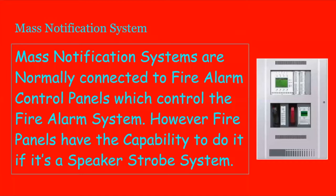Mass notification systems are normally connected to fire alarm control panels, which control the fire alarm system. However, fire alarm panels have the capability to do it if it's a speaker strobe system. So if you have a system like mine, which is a horn strobe system, you will not be able to do that unless you're doing it through an external intercom, which is not run through the fire system. But mass notification systems don't only come in fire systems — they also are outside of fire systems, so they can be related with tornado sirens and other sirens like that.